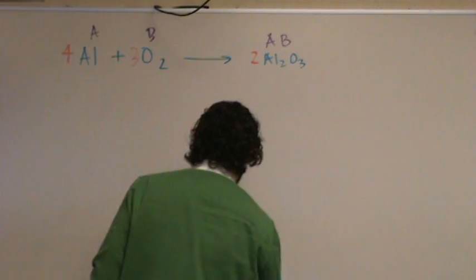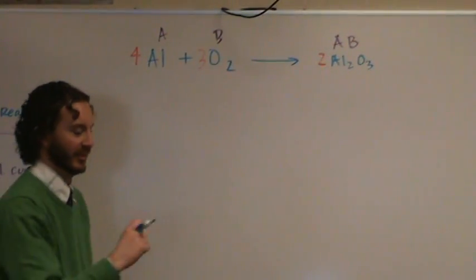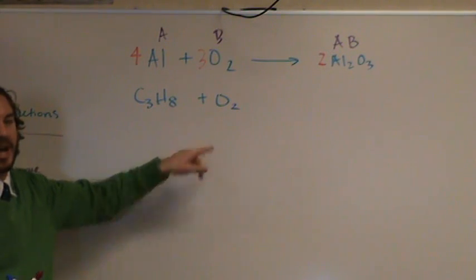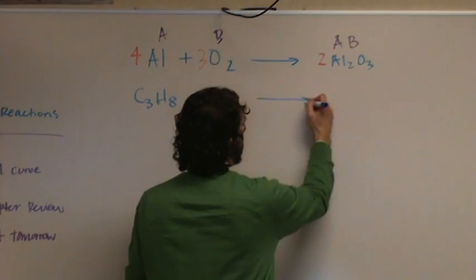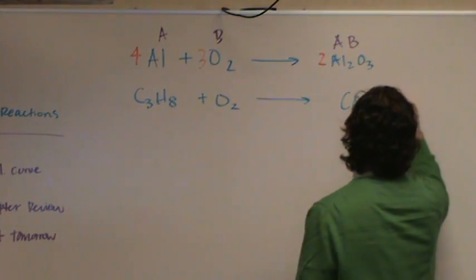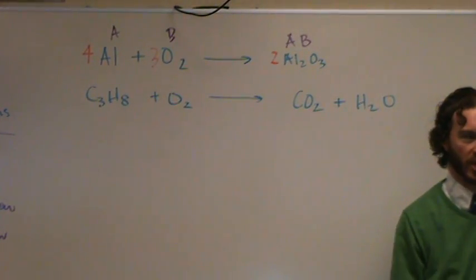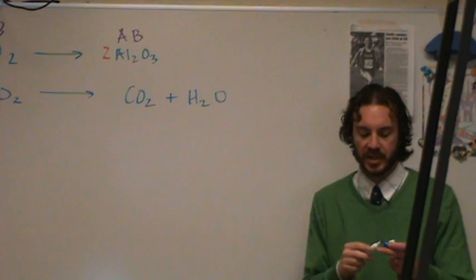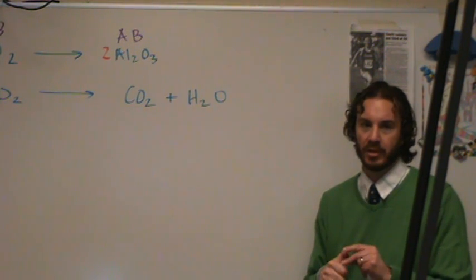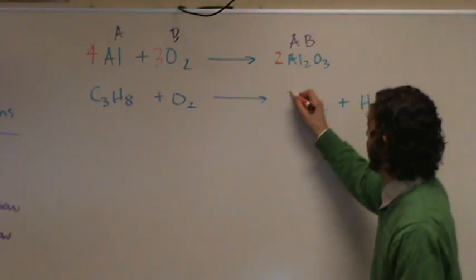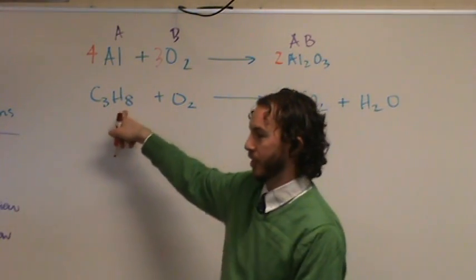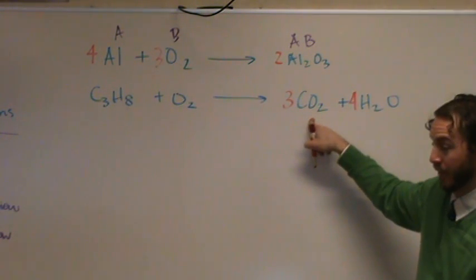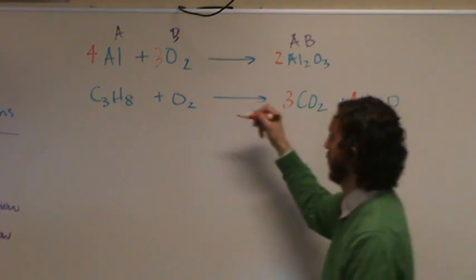Number two is combustion. C₃H₈ plus O₂. This looks like single replacement but you have to realize this has C and H, plus oxygen — so it's a combustion reaction. You always make the same two products: CO₂ and H₂O. No crisscrossing here. Now you balance it: start with C's — put a 3 in front of CO₂. Then move to H — there are 8 hydrogens, so put a 4 in front of H₂O, giving you 4 water molecules. Then count oxygens: 3×2 = 6 from CO₂, plus 4×1 = 4 from H₂O, totaling 10 oxygens, so put a 5 in front of O₂.